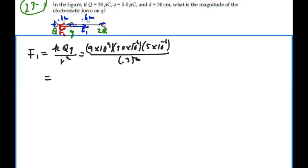So I have 9 times 10 to the 9 times 30 times 10 to the minus 6 times 5 times 10 to the minus 6 divided by 0.3 squared. I get 15 newtons for that force, and that force is to the right.